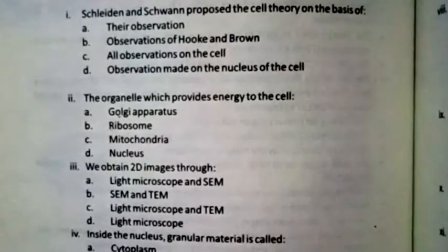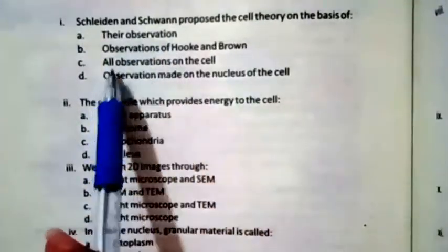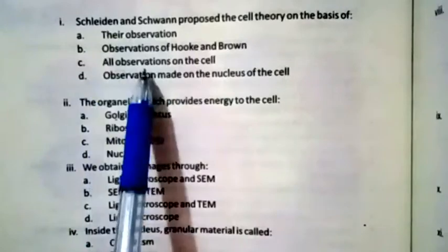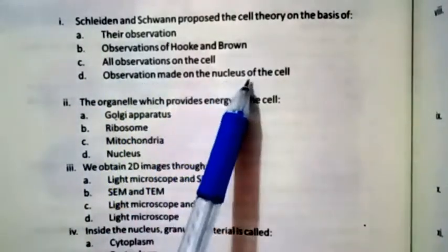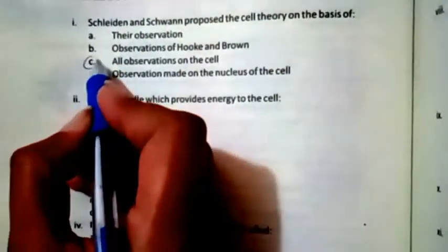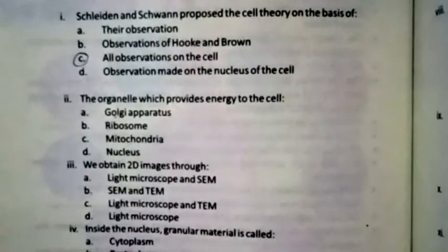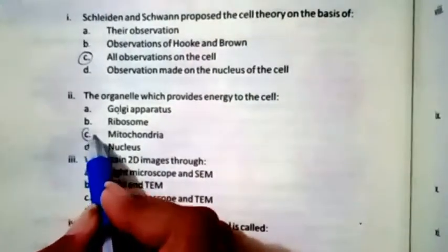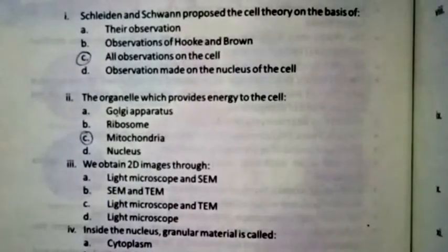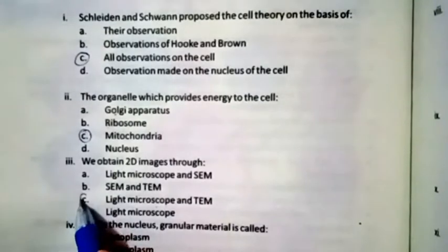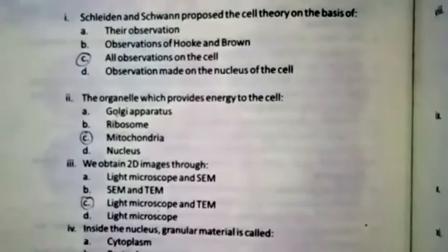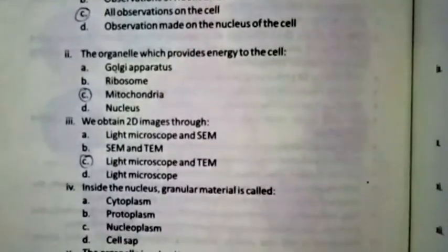Question one: Schleiden and Schwann proposed the cell theory on the basis of their observation — observation of Robert Brown, observation on the cell, or observation made on the nucleus of the cell. The right option is C. The organelle which provides energy to the cell — the right option is mitochondria.